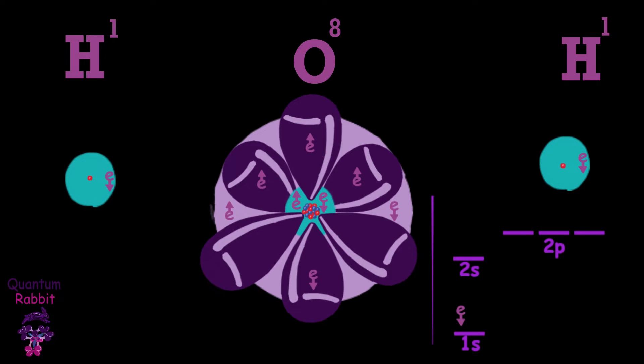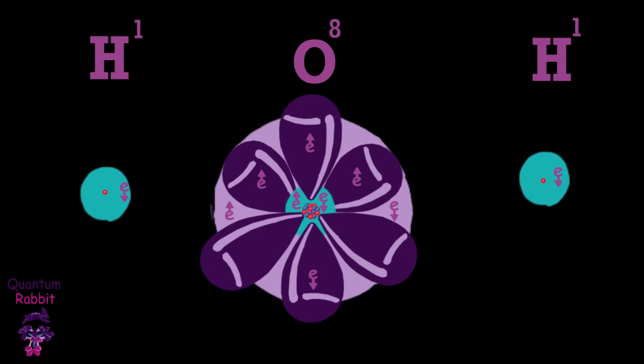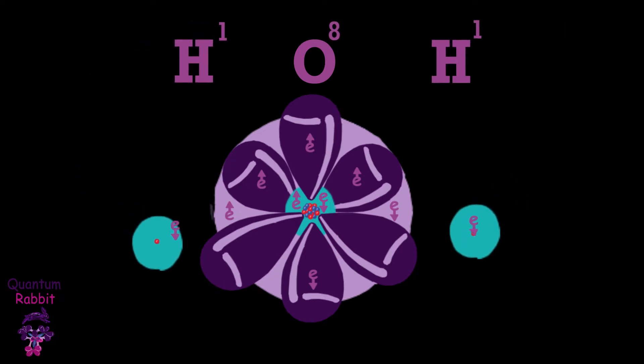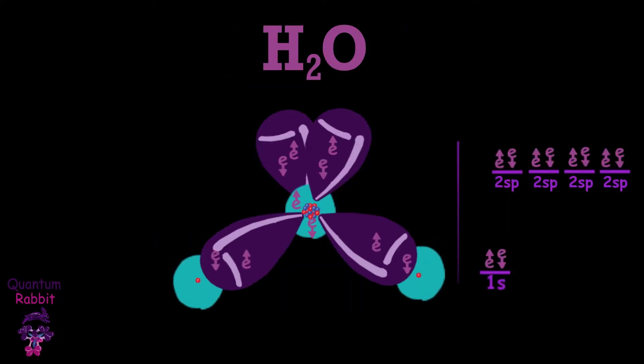So the oxygen atom and two hydrogen atoms bond to share their electrons and complete their orbitals. This bond is called a covalent bond and they are difficult to break.